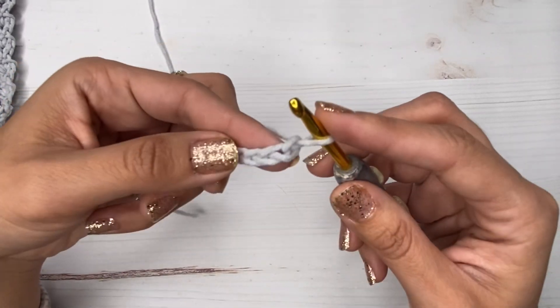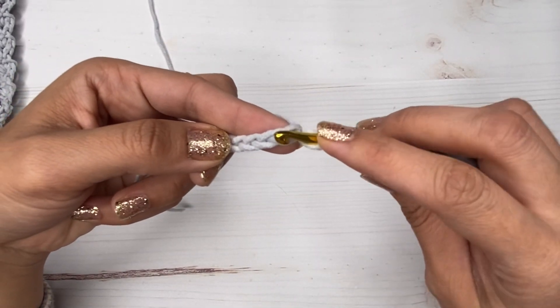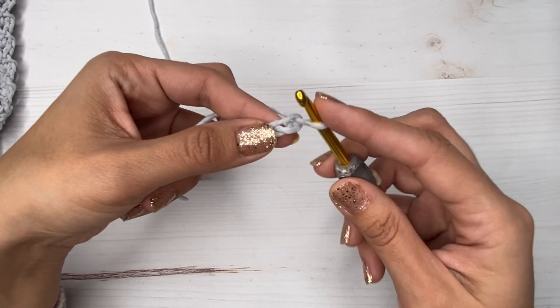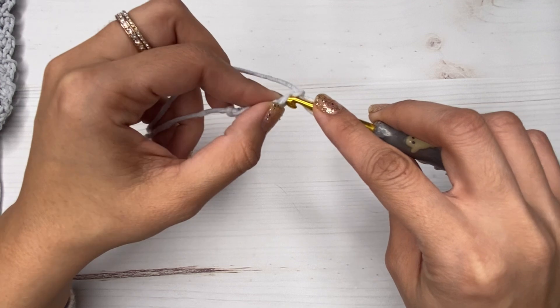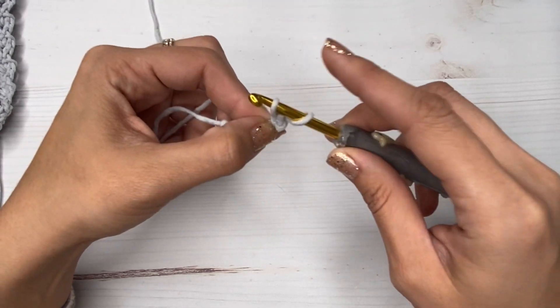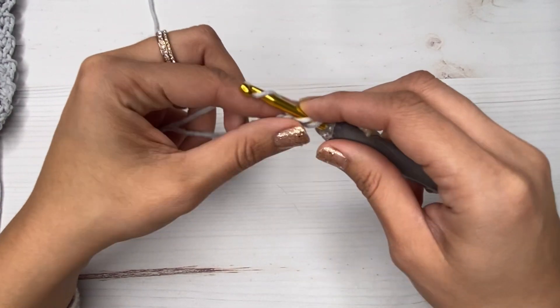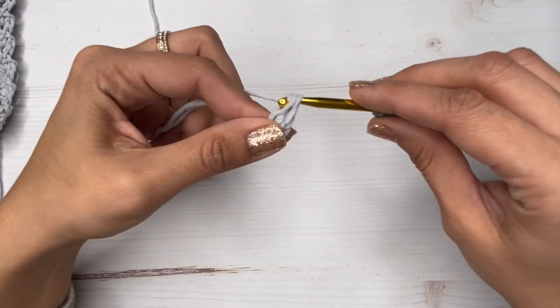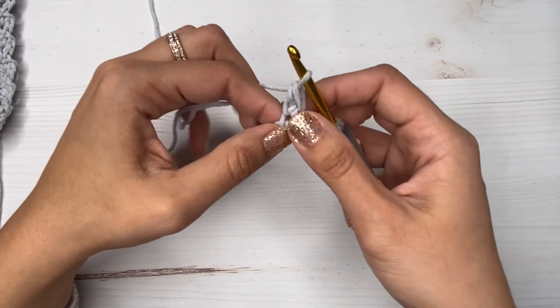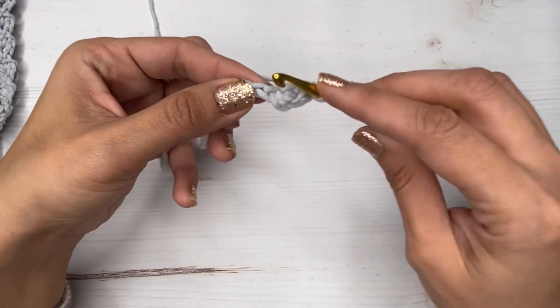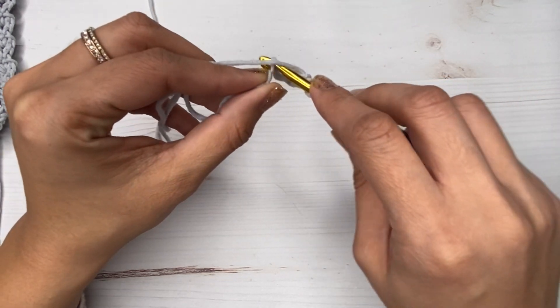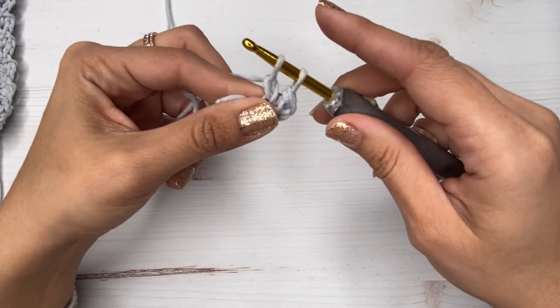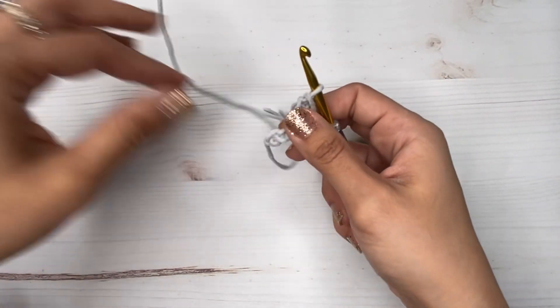All right, so here's my five chains and we're going to make an extended single crochet on our second chain from the hook. So here's our second chain and I'm going to make an extended single crochet there. If you don't know how to make the extended single crochet, I will leave the link on the tutorial that I have on it, but it's essentially just a modified single crochet and it's really simple.